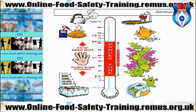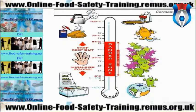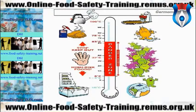The next set of temperatures is the temperature danger zone — between 5 and 63 degrees Celsius — where bacteria start to multiply and cause a problem. All food must be kept out of the temperature danger zone. If it is hot food, it must be served above 63 degrees Celsius; if it is cold food, it must be served below 5 degrees Celsius. At 5 degrees Celsius, bacteria are starting to wake up from dormancy and will begin to multiply slowly.